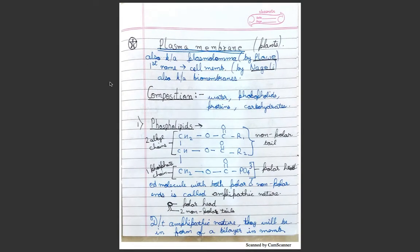The plasma membrane in plants is also known as plasmodesmata or plasmolemma. This name was given by Pfeffer first. The name cell membrane was given by Nägeli. It is also known as biomembranes. It has the following composition: water, phospholipids, proteins, and carbohydrates.